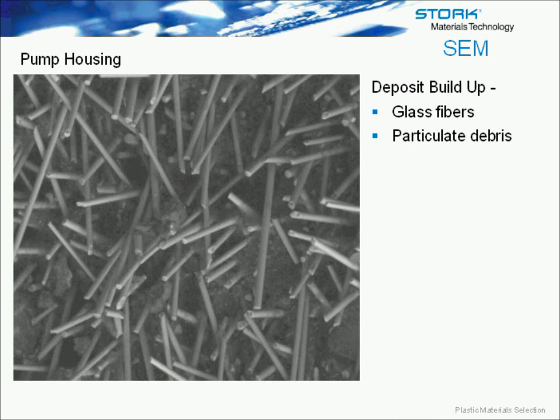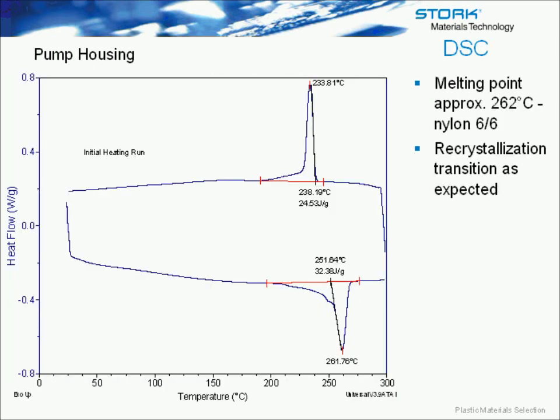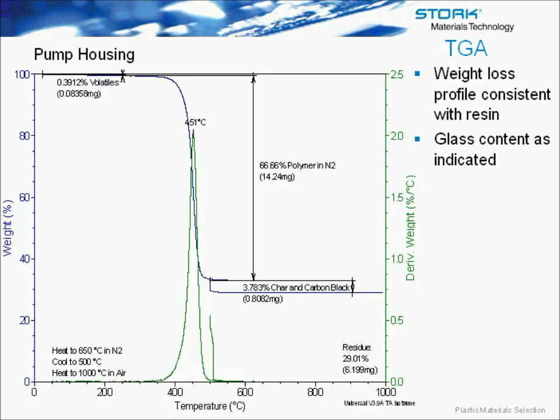Taking a look at what the deposit was inside the housing, we scraped some off and analyzed it with the SEM. You could see the majority of the deposit was actually glass fibers, but there was also some particular debris present. Taking a look at the resin and comparing it to the failed part — making sure the material was consistent with what it was supposed to be, that there was no contamination present — and indeed it was. We also did DSC to look at crystallinity and verify that it was indeed a nylon 6-6 resin, which it was. Good crystallinity was noted between the first and second heating run. The heat of fusion, which indicates crystallinity, was consistent between the first and second heating run of the failed part and also consistent with that of the raw resin, indicating it was molded to maintain adequate crystallinity.